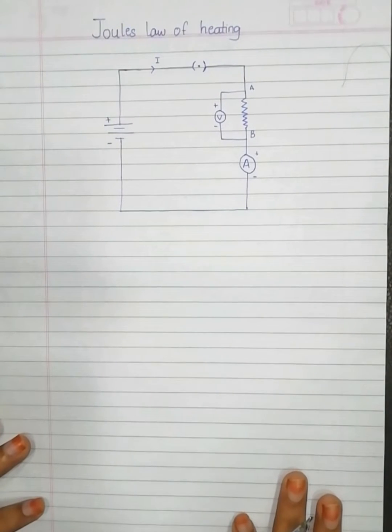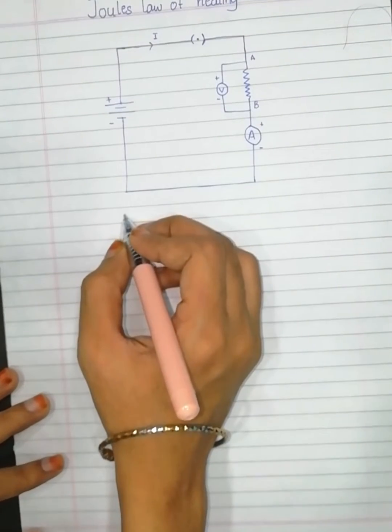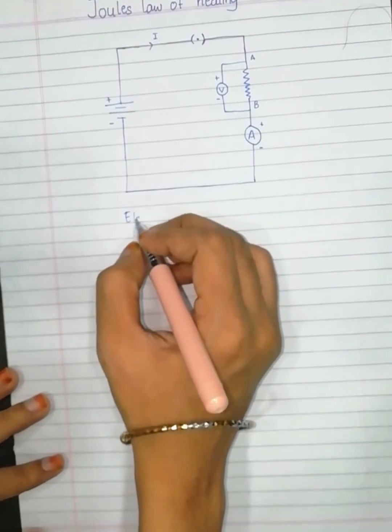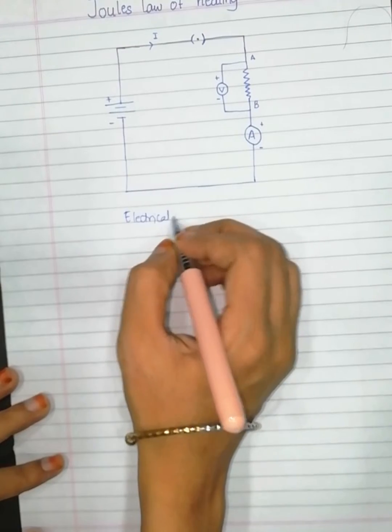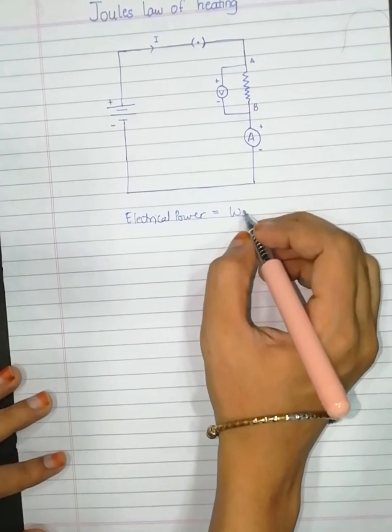Hello everyone, welcome to Solely Science. In today's video we will see the derivation of Joule's law of heating. It is a very simple derivation. First of all, you need to know that electrical power is equal to the work done upon the time required.